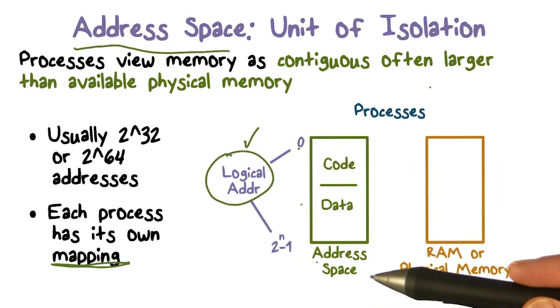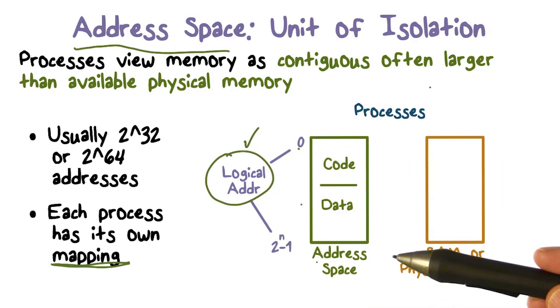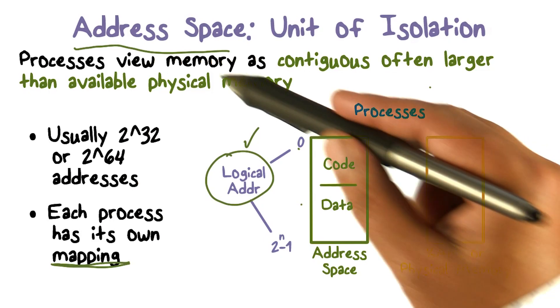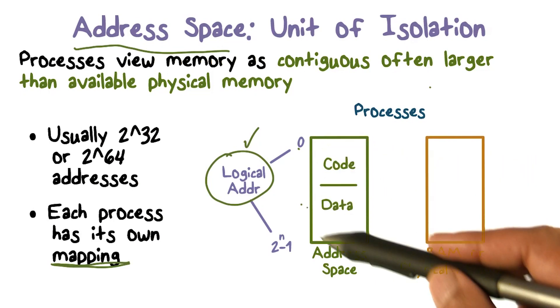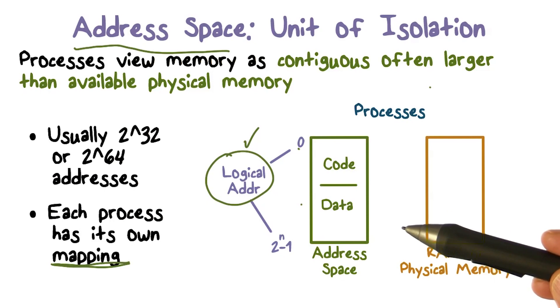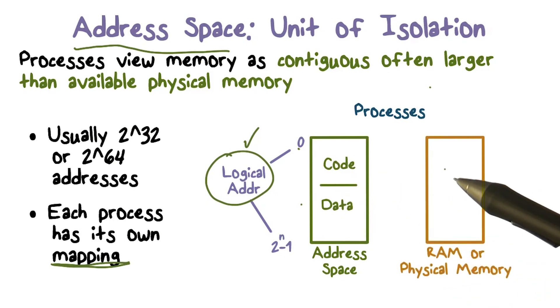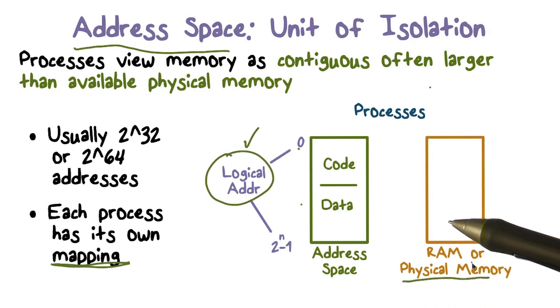Eventually, remember, the operating system has to use physical resources to implement these abstractions or virtual resources. Address space is a virtual resource that abstracts memory. So this address space, the information that we stored in this address space, eventually we have to use physical memory, RAM or physical memory, to actually implement this abstraction we call an address space.